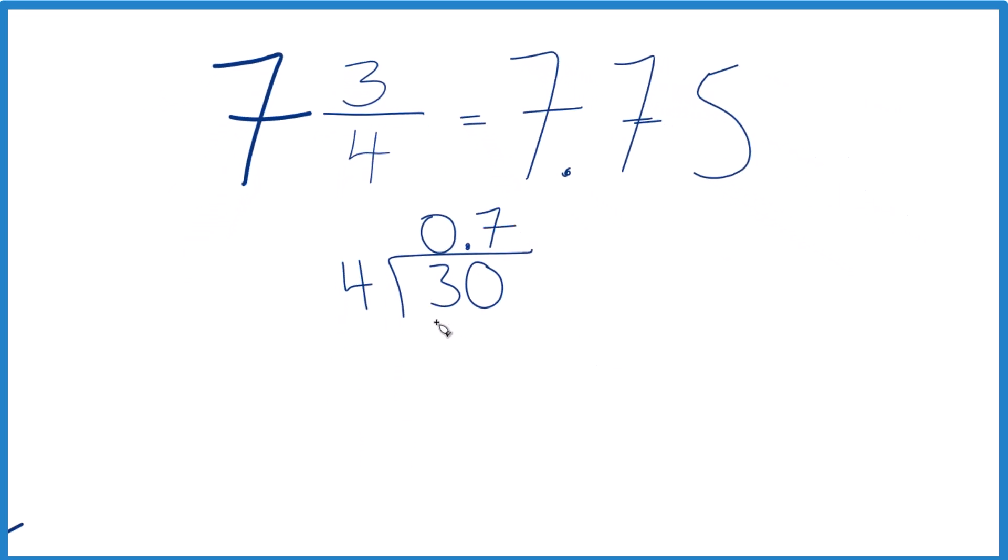Now seven times four, that's 28. Subtract, we get two. Call it 20. We're going to move over one. Five times four, that's 20. Subtract, no remainder.